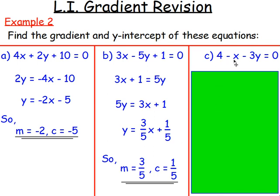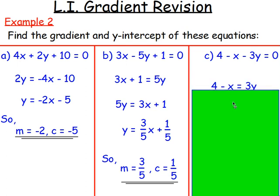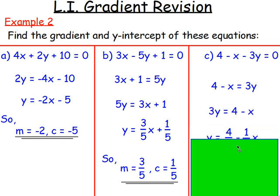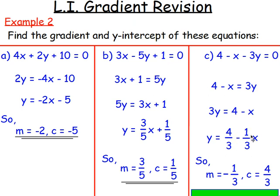For c: 4 take away x take away 3y equals 0. Same idea — we want to get y on its own. Because y is negative, I'll move the 3y to the other side by adding 3y to both sides. That gives 4 take away x equals 3y. Writing it back to front: 3y equals 4 take away x. Divide every single term by 3 — 4 divided by 3 gives four thirds, and 1x divided by 3 gives one third x. Keep the negative. So the gradient m is negative one third, and the y-intercept is four thirds.